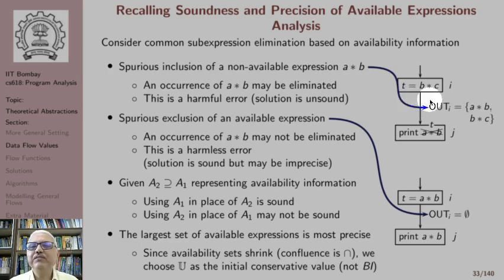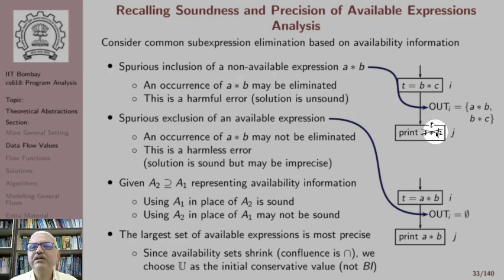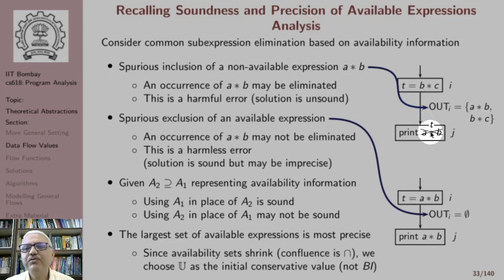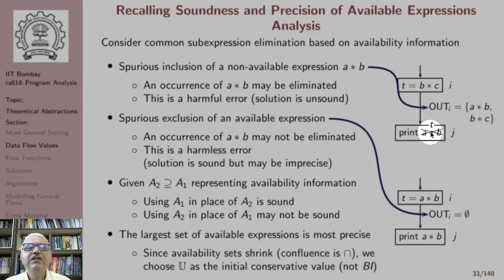Here is an example we have seen before. If expression B*C is available but we also mark expression A*B as available, an occurrence of A*B may be eliminated — replaced by some temporary corresponding to A*B. But if A*B has not actually been computed, its value is not available, and this is a harmful error leading to unsoundness. When we include an extra expression which is not available into the set of available expressions, this spurious inclusion is a harmful error.